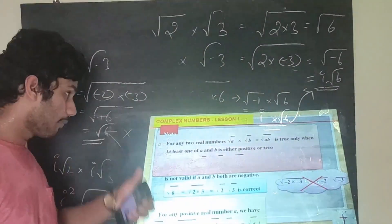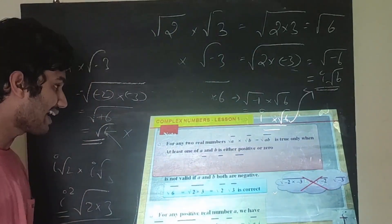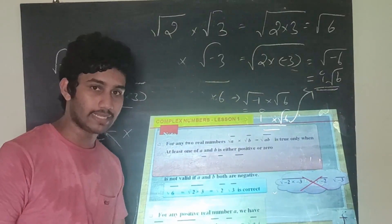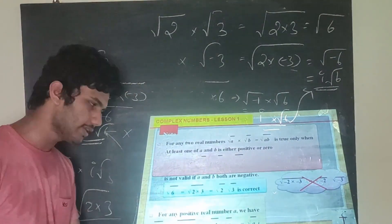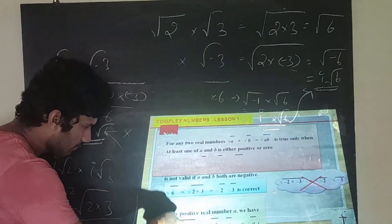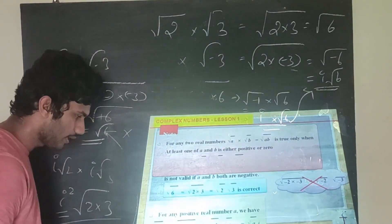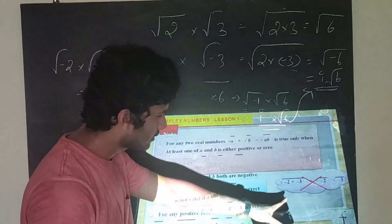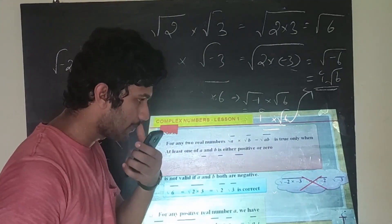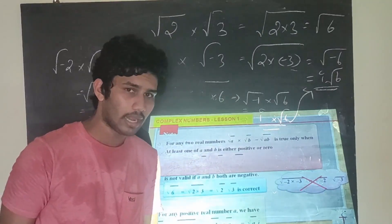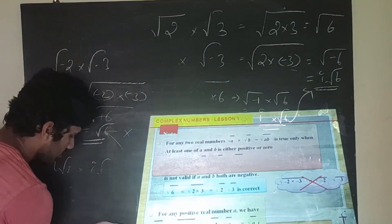For any two real numbers, √a · √b = √(ab) is true only when at least one of them — either a or b — must be positive or zero. We demonstrated this: √(−2) · √(−3) gives −√6 by the correct method, not +√6 as the naive rule would suggest.